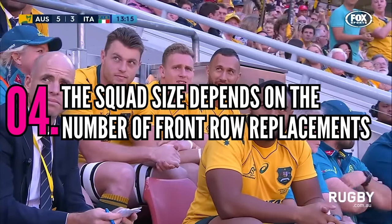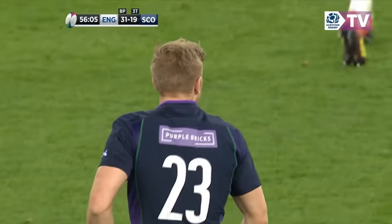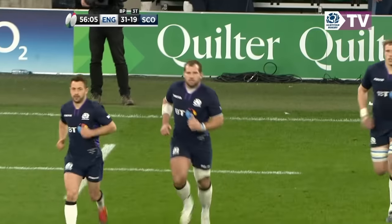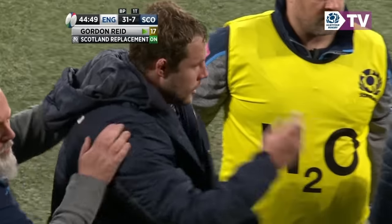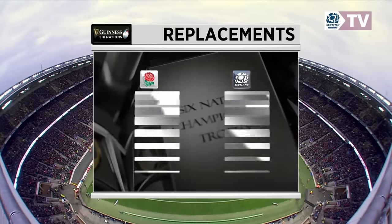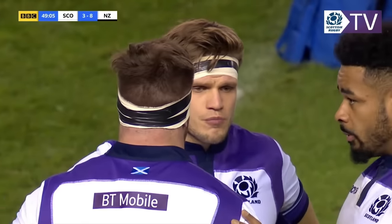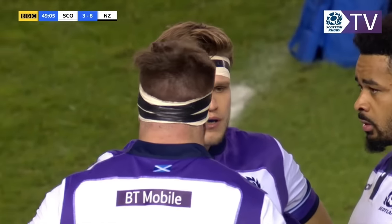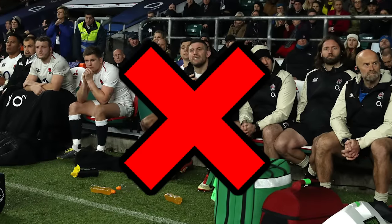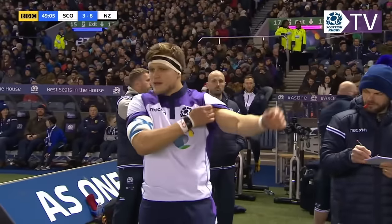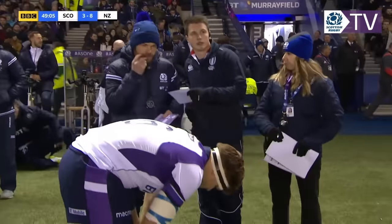Number four: the squad size is dependent on the number of front row replacements. A matchday rugby squad consists of 23 players, but some replacements are more important than the rest. The number of replacement front rows determines the number of substitutes available. If a team has zero replacement front rows, they can have a maximum squad size of 15 players — meaning no replacements. With one replacement front row, the squad size increases to 18, giving them three substitutes.